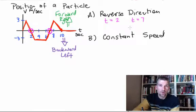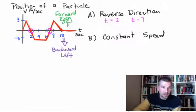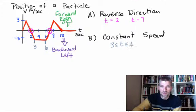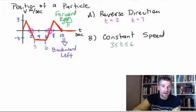What about where you're at a constant speed? That is the point where your speed does not change — you're moving but your speed does not change. On this particular graph, that happens when we get to t=3 and we have a constant speed through to t=6. So we would say when 3 is less than or equal to t is less than or equal to 6, that is where our constant speed is.